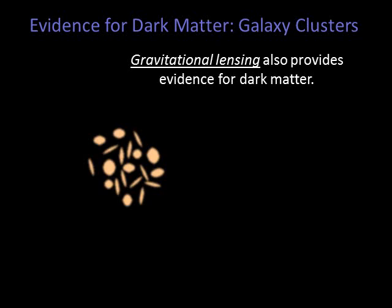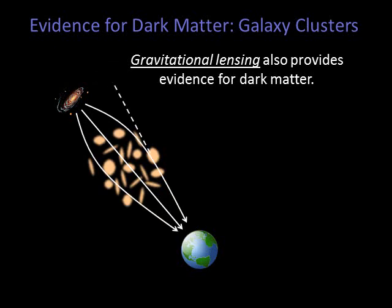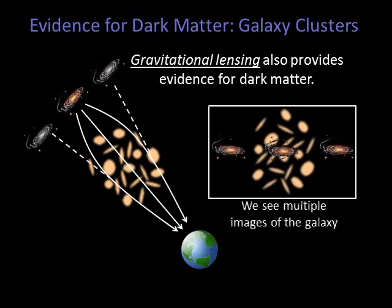The effect of gravitational lensing also provides evidence for dark matter. Gravitational lensing occurs because massive objects can actually bend light — Einstein predicted this in his general theory of relativity. Imagine a large galaxy cluster we're observing from Earth. Behind the cluster is a large spiral galaxy. The light from the spiral galaxy passes through the cluster on its way to Earth, but the light bends due to the mass of the cluster. We see ghost images of the galaxy in the directions from which the light appears to be coming.